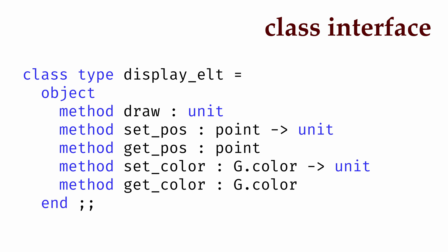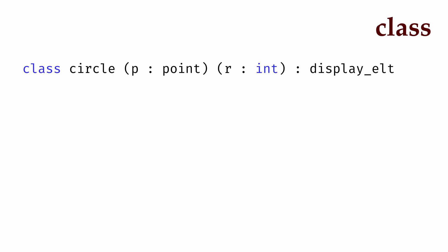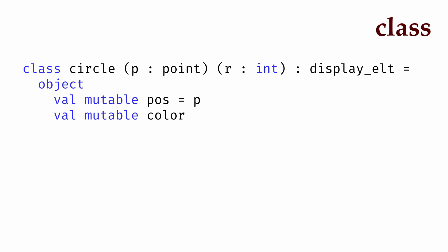Now we can define a class that satisfies this interface. For example, we could define a class called circle. Recall that a class specifies how we create a new object. So in this case we're going to say that when we provide the circle class with a particular point and radius, what we'll get back is an object of type displayelt. We'll start the object definition with the keyword object. Inside of our object we can have both data in the form of instance variables and methods that offer functionality. Our circle needs a position called pos, which is a mutable value because we might want to change the position later. Its initial value will be p, the first argument we passed to the circle class. We also need an instance variable color that stores the color of the circle. It's also mutable and its color is initially black.